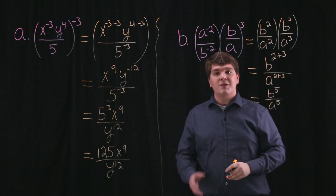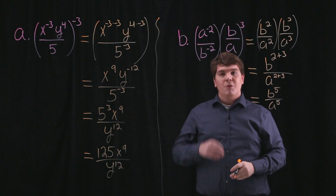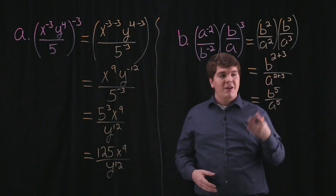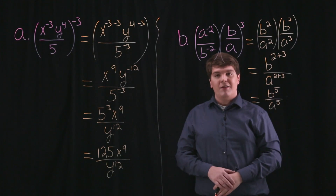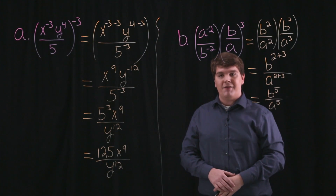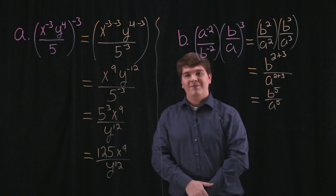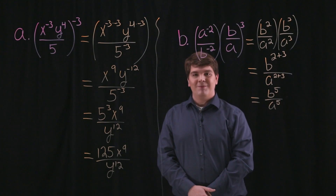So this expression written with only positive exponents is b to the 5th divided by a to the 5th. Thank you.